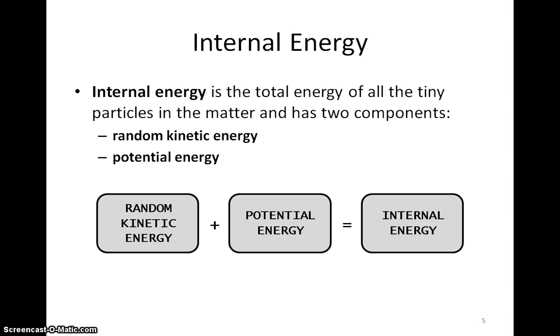Internal energy is the total energy of all the tiny particles in the matter. It consists of two components: random kinetic energy and potential energy. In other words, particles have both random KE and PE. Random KE plus PE equals internal energy.